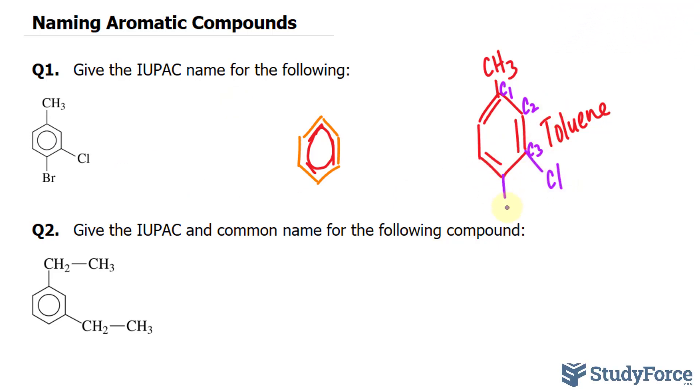And then our third over here. So we write bromine first, and this exists at C4, 4-bromo-3-chloro-toluene.